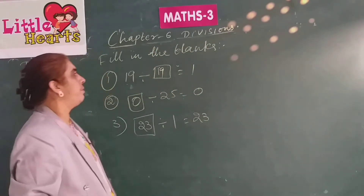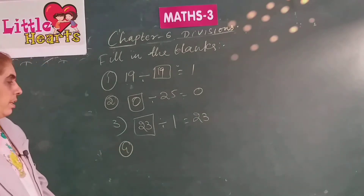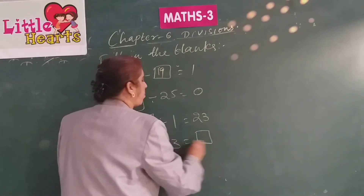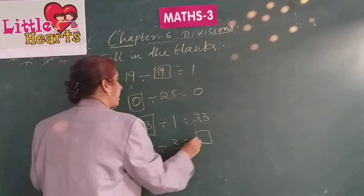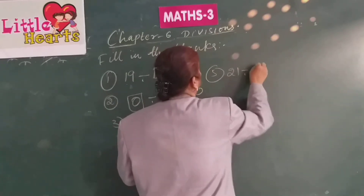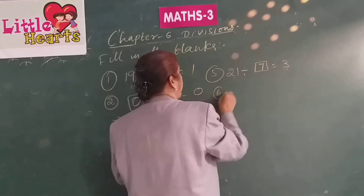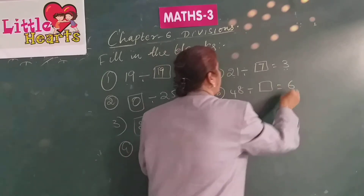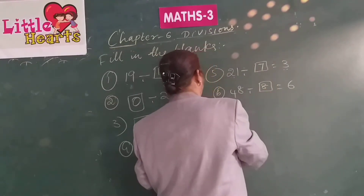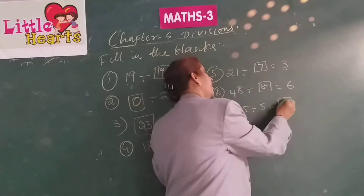To carry out divisions, you need to be thorough with the multiplication tables. Unless you know the multiplication tables, you cannot carry out divisions. For example, 18 divided by 3 — read the 3 times table until you get 18: 3 sixes are 18. 21 divided by blank equals 3 — 3 sevens are 21. 48 divided by blank equals 6 — 6 eights are 48. 35 divided by 5 equals blank — 5 sevens are 35.